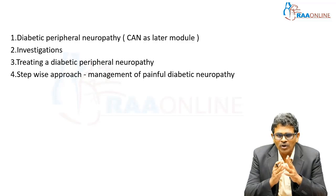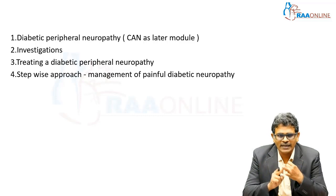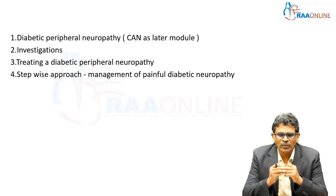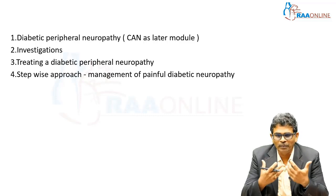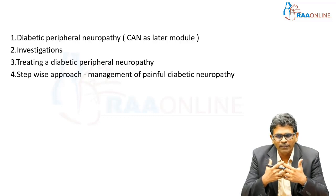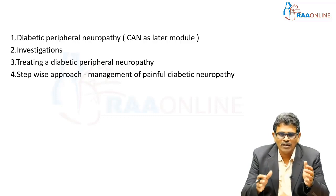When we talk about peripheral neuropathy, there are key questions: What investigations does the patient really need, and are we able to confirm a diagnosis of diabetic peripheral neuropathy? That is the second thing. Third, how do we treat, and what else needs to be considered? Fourth — and most importantly — how do we control pain? Apart from pregabalin, what else can we give, and how do we approach a patient who is not responding to it?